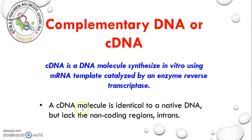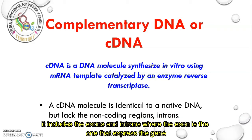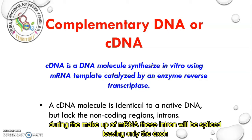A cDNA molecule is identical to a native DNA, but it lacks the non-coding region — the intron. You need to know that human DNA is very vast and very large. It includes exons and introns, where the exon is the region that expresses the gene and the intron is the non-coding region. During the production of mRNA, the intron will be spliced out.